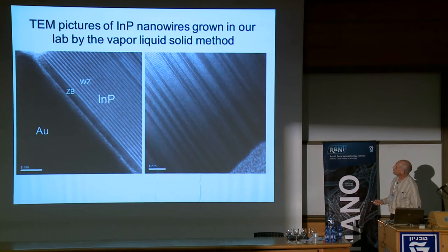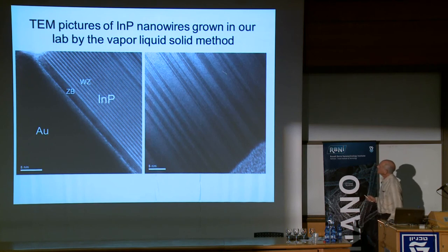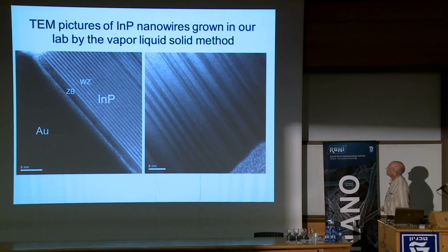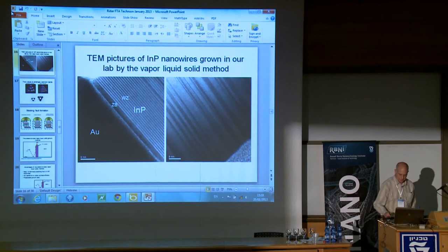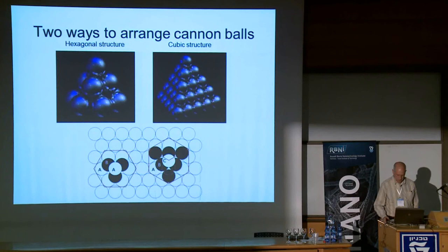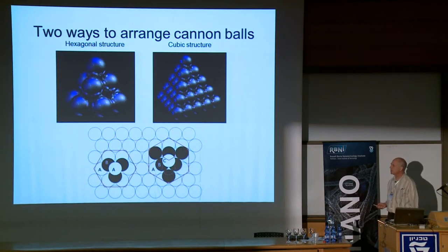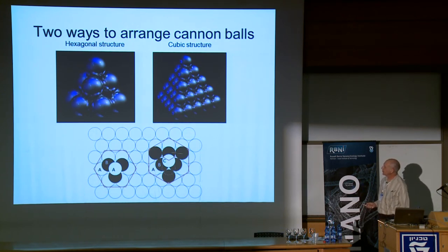We can see some examples here of the misfit dislocations - the defects caused by stacking faults during the growth of indium phosphide nanowires using the conventional VLS method. I'll just briefly mention why it's so difficult to eliminate the stacking faults. We grow along the [111] direction, and along this direction it is well known there are two ways to arrange the atomic layers, called AB and C.